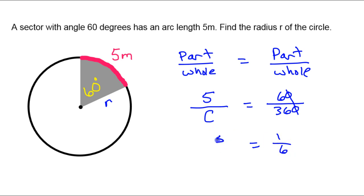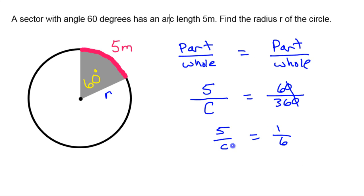So 5 over C is equal to 1 sixth. If I cross multiply, well, C times 1 is just C, and 5 times 6 is 30. So I quickly discovered that the circumference is 30.